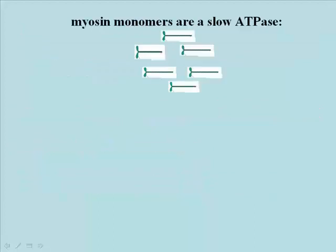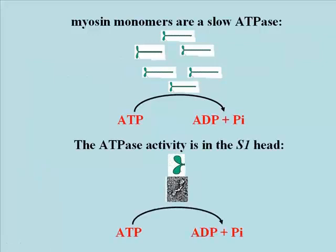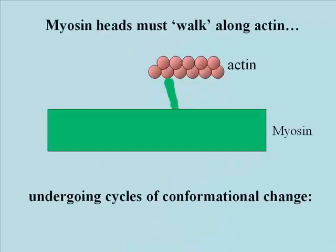The S1 fraction was the only component of myosin that would hydrolyze ATP, and again it was slow hydrolysis. To review: these myosin monomers are slow ATPases, catalyzing ATP hydrolysis. If you do this experiment with the tail, you don't get any activity. The myosin heads, which are the crossbridges to actin, must bind and unbind, and in effect walk along actin in order that the actin be drawn sliding along the myosin filament.